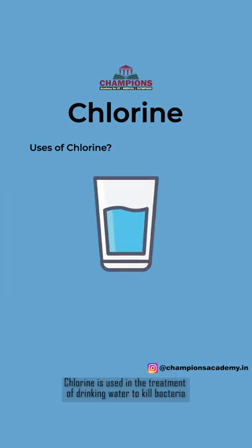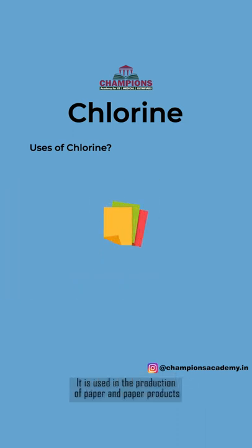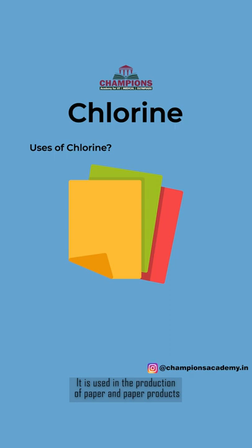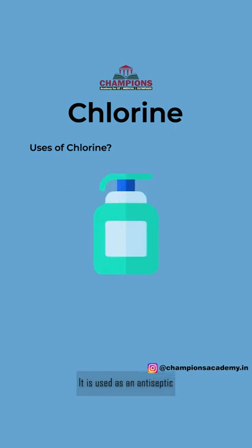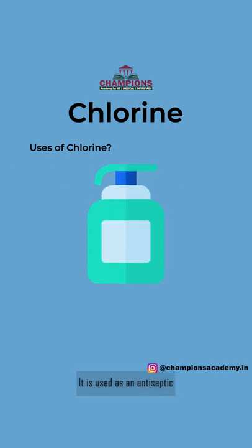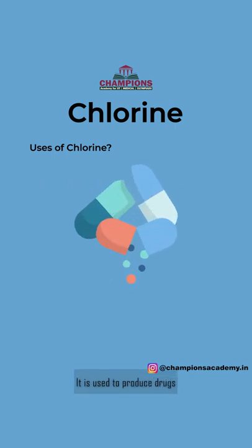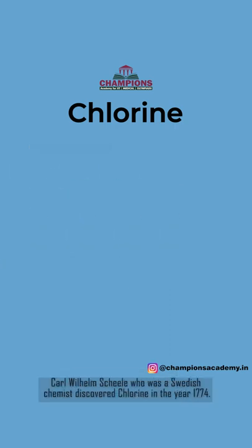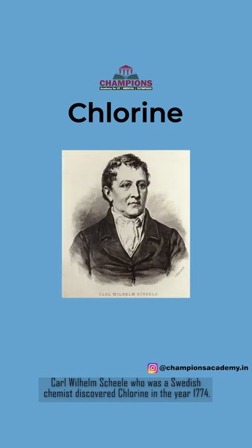Chlorine is used in the treatment of drinking water to kill bacteria. It is used in the production of paper and paper products. It is used as an antiseptic and to produce drugs. Carl Wilhelm Scheele, a Swedish chemist, discovered chlorine in the year 1774.